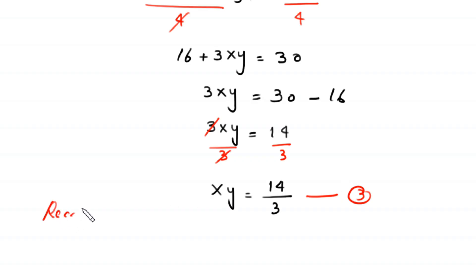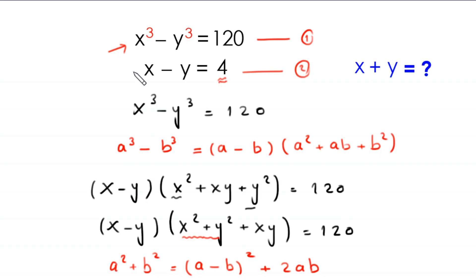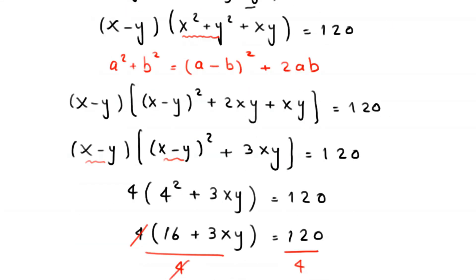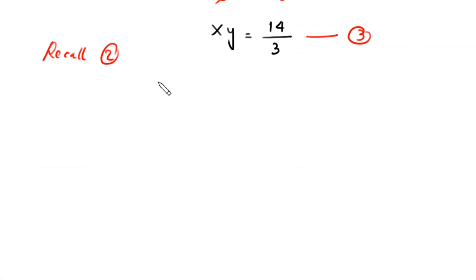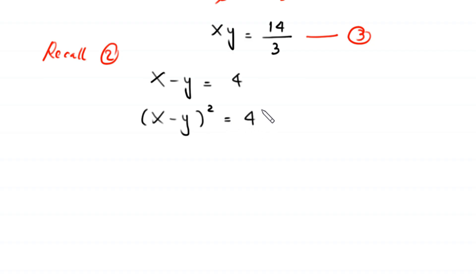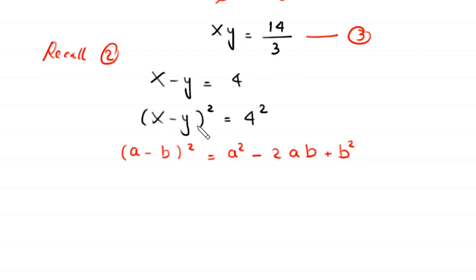Now we recall equation number 2 and square both sides. Equation 2 is x minus y equals 4, so squaring both sides gives x minus y whole squared equals 4 squared. By the algebraic identity a minus b whole squared equals a squared minus 2ab plus b squared, this becomes x squared minus 2xy plus y squared equals 16.